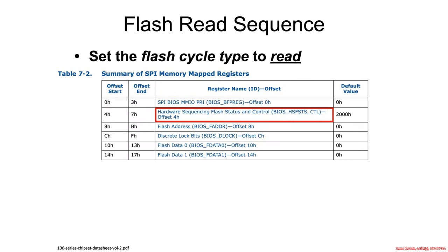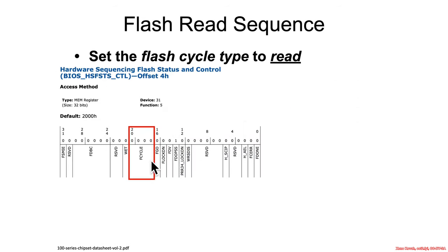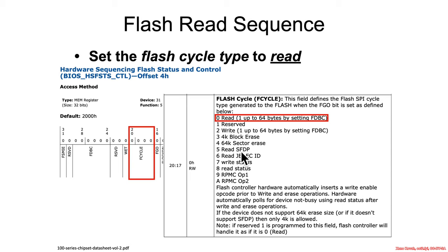Looking at the 100-series chipset at offset 4, we see the same combined register, but F-cycle is now 4 bits instead of 2 bits, meaning Intel extended it with extra support. Read is still 0, write is still 2, and erase is now a 4KB block erase, but it also supports 64KB block erase and other operations.